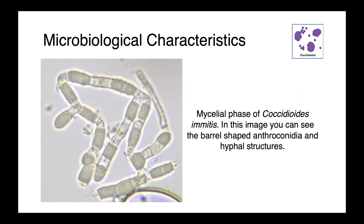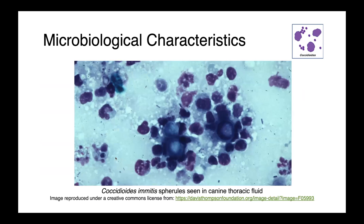Coccidioides doesn't have a true yeast phase in the lab. What you can see in this image are Coccidioides imitis spherules in canine thoracic fluid — these large round structures which will ultimately contain endospores and grow within the host.